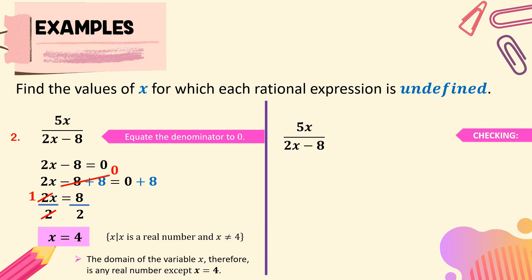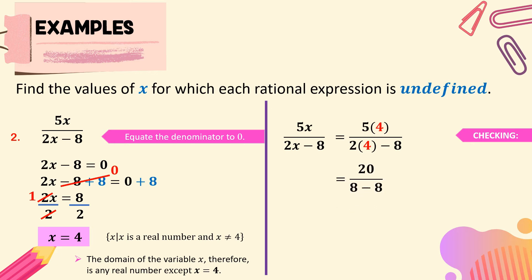To check: given 5x over 2x minus 8, we substitute x equals 4. We get 5 times 4 over 2 times 4 minus 8, which is 20 over 8 minus 8. That gives 20 over 0, and 20 divided by 0 is undefined.